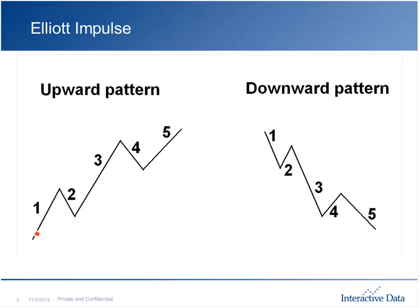It all begins with wave one, that initial swing to the upside. As that swing takes place, people want to take some profit and we see wave two, which is a selling wave — the first correction within this pattern. The next piece is wave three, which is typically a very strong, dynamic, momentum-driven move. It's comprised of two groups of traders: those who sold wave one short, and momentum traders who jump on when the short sellers start to cover.